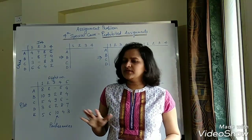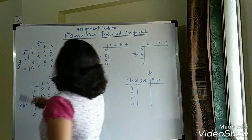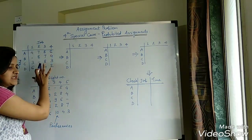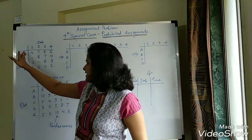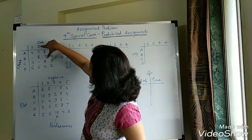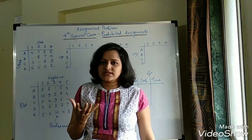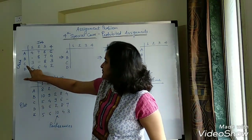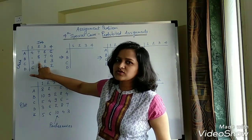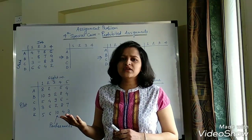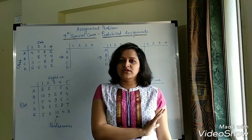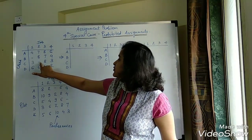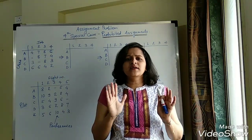So what does prohibited assignment mean? Let's directly jump to the example. We have 4 clerks and 4 jobs. Let's assume this as a typical banking scenario where 4 clerks A, B, C, D are working. Let's assume job number 2 is the loan section, and clerk C is a cashier — the person who sits at the cash window. So this person won't be able to perform the loan job, maybe because they've never worked in that section or are fully busy with the cash department. This is known as a prohibited assignment — where the assignment is not allowed.